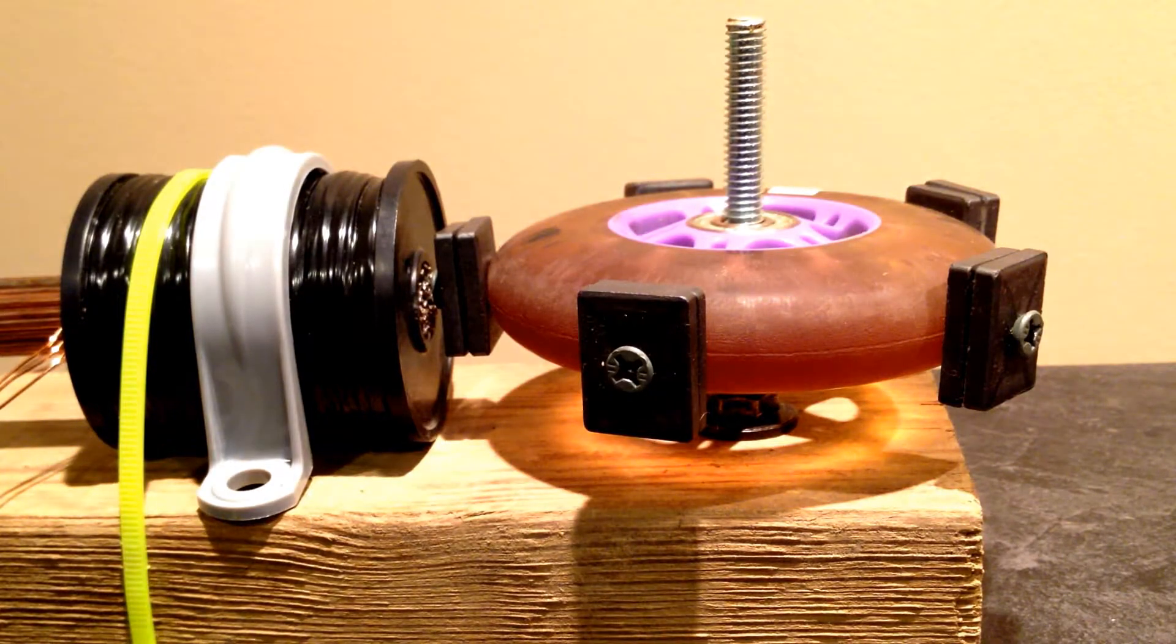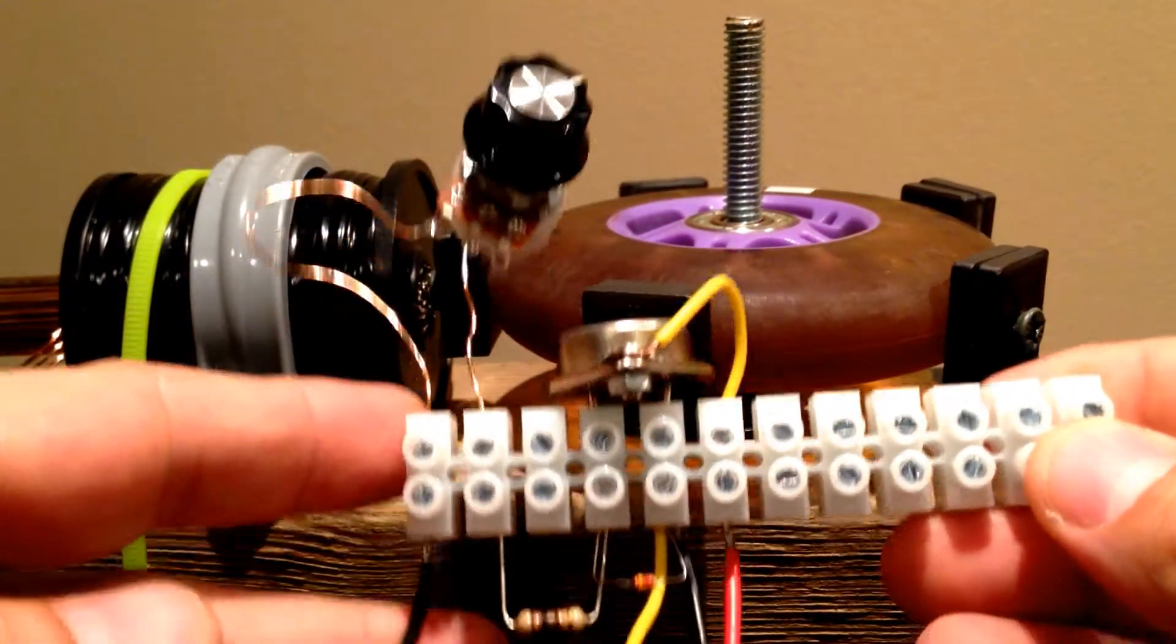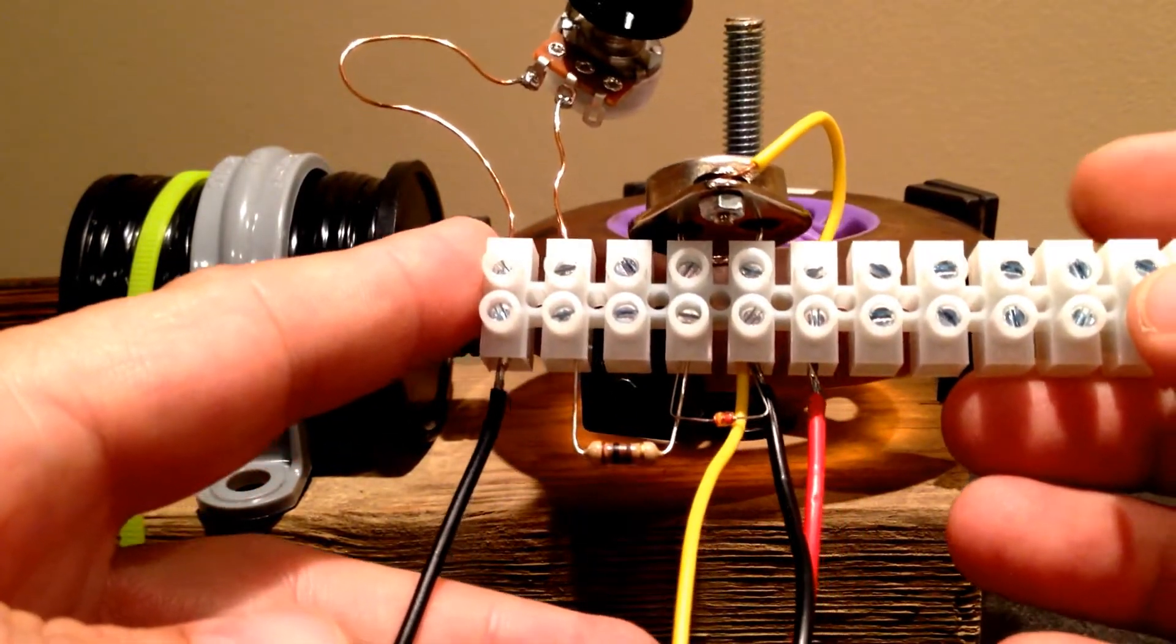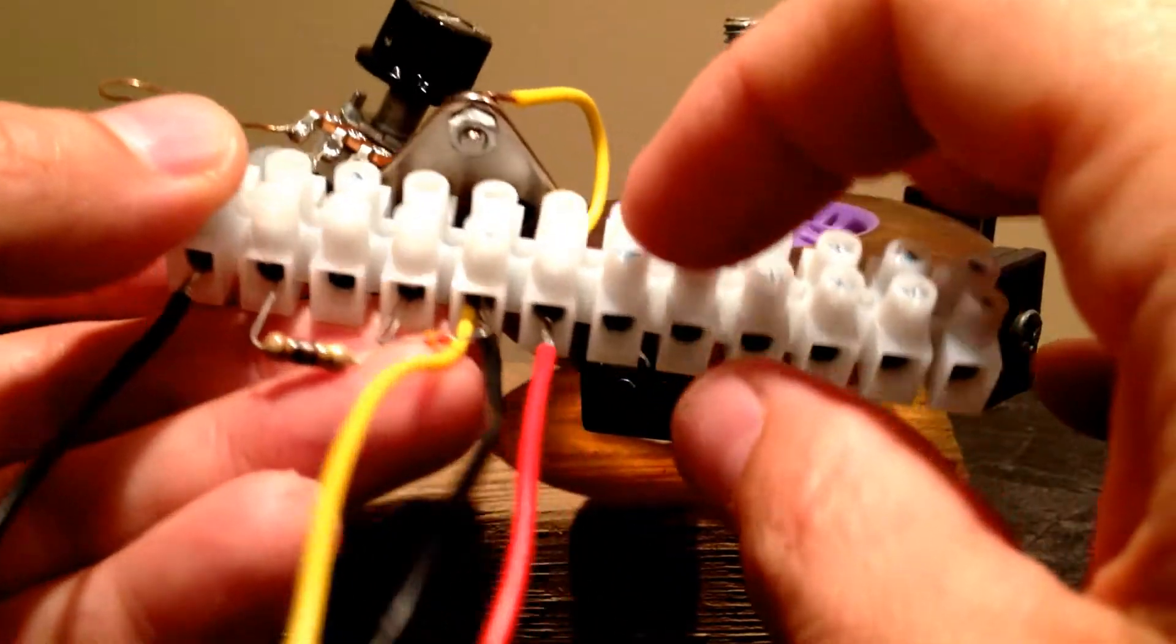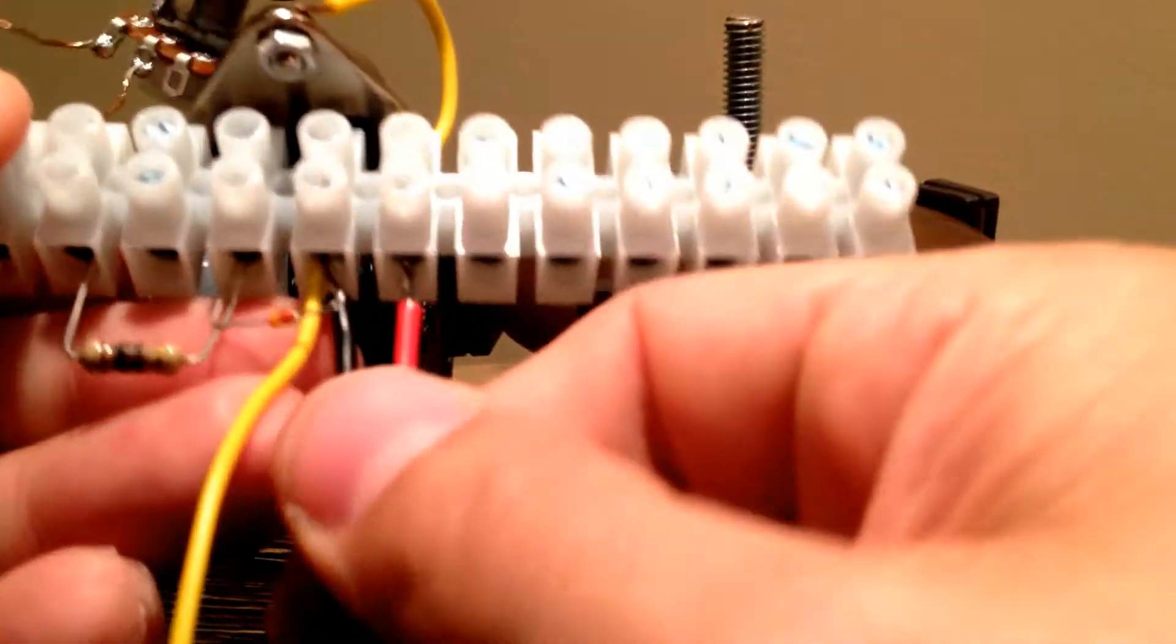So another thing not necessary but makes it a little bit easier since soldering isn't my forte was to buy one of these European strips. And it's basically just what these do is these open and you put a wire in.